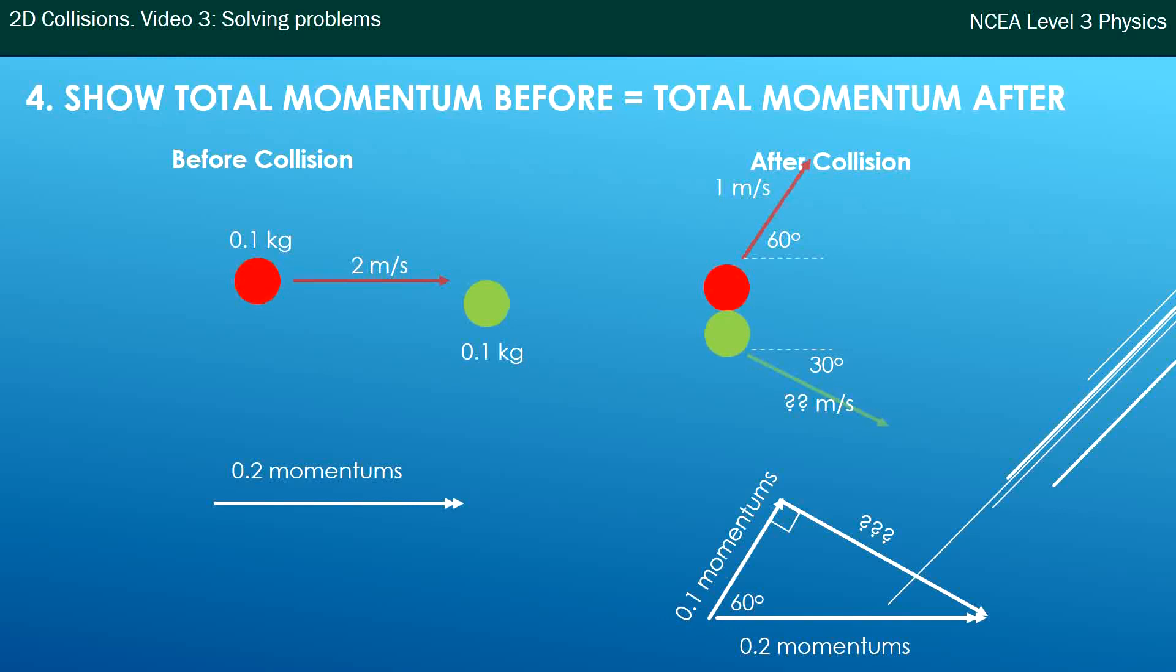So I kind of had that in my head when I was drawing this vector addition diagram, knowing that that arrow with all the question marks on it had to be quite long to make sure that the total went across to the right.